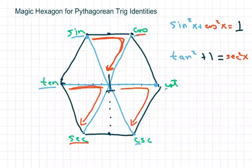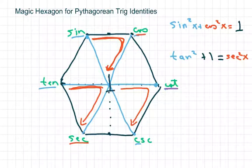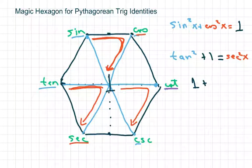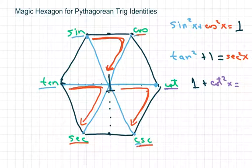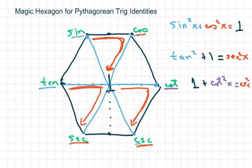And then for the last one, we're going around this way. So we're going to do 1 first: 1 plus cotan squared equals — and we're ending at cosecant — so cosecant squared.